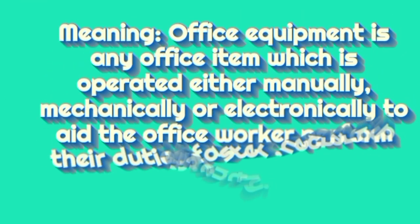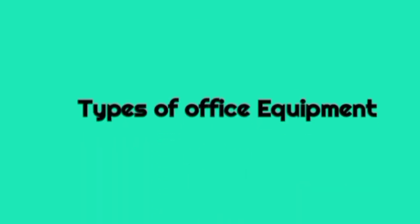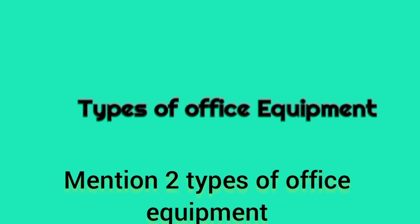Now let's define office equipment. Office equipment is any office item which is operated either manually, mechanically, or electronically, to aid the office worker perform their duties faster, neater, and efficiently. There are types of office equipment, and these are in various sizes, shapes, performing their unique functions.